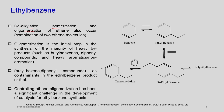If you consider oligomerization — two molecules of ethylene coming together — this process is the initial step in the synthesis of the majority of heavy byproducts. From here you get butene formation, butene leads to butyl benzenes, diphenyl compounds, and heavy aromatics. This is the starting point of heavy byproducts. These heavy byproducts — butyl benzene, diphenyl benzene — are formed as contaminants in the ethyl benzene product or fuel. Controlling ethylene oligomerization has been a significant challenge in catalyst development for ethyl benzene.